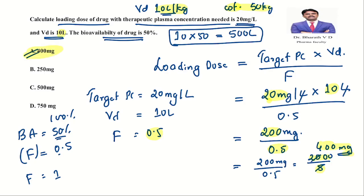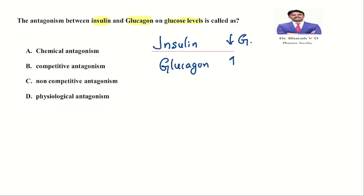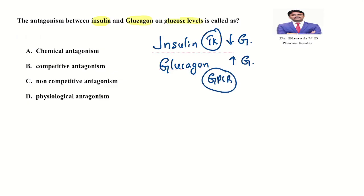Coming to the last question: the antagonism between insulin and glucagon on glucose level — what is this antagonism called? Insulin decreases glucose; glucagon increases glucose. Insulin acts on tyrosine kinase receptors and glucagon acts on G-protein coupled receptors. When a drug acts on different receptors and the actions are opposite, we call it physiological antagonism.